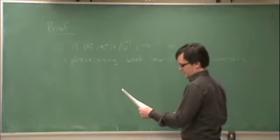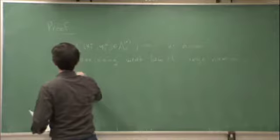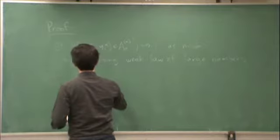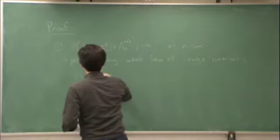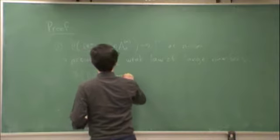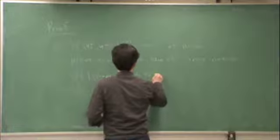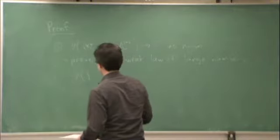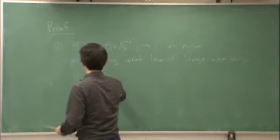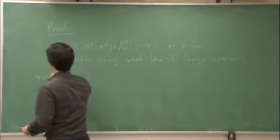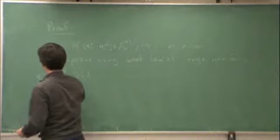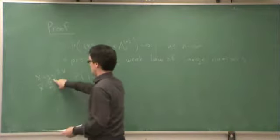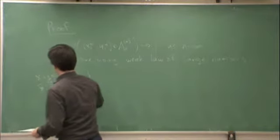Let's remember what the Weak Law of Large Numbers says. Let x be a random variable. Then x-bar is the sample mean: one over n, sum from i equals 1 to n of x_i.